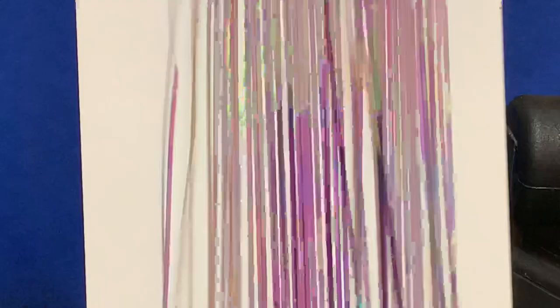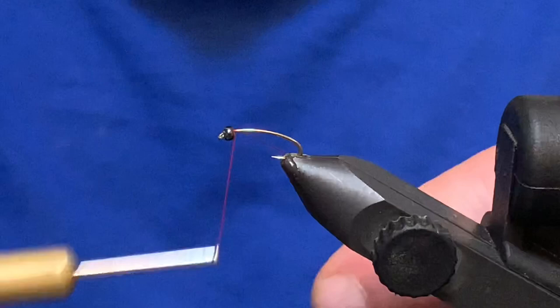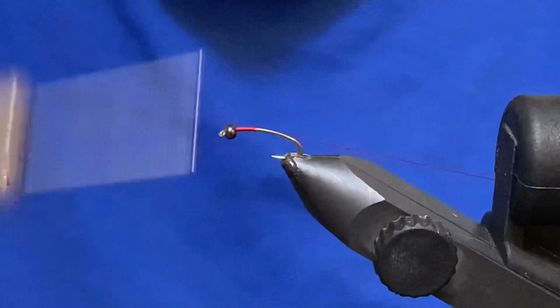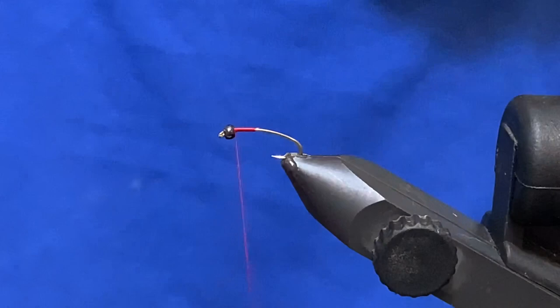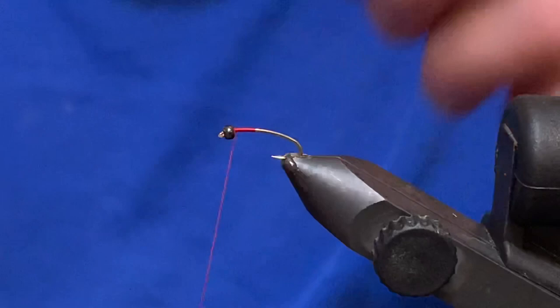For my rib, I'm just going to use some regular red Flashabou. It's not the holographic, it is just the plain red. I'll tuck that in right behind the bead and run that the length of the shank.